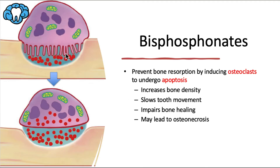Here we have the surface of a bone, and the purple cell here is called an osteoclast. An osteoclast is a big multinucleated cell derived from hematopoietic stem cells in either the spleen or the bone marrow. They attach to bone and secrete protons — these little red dots here — that dissolve and destroy the bone.